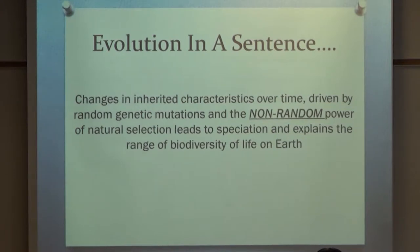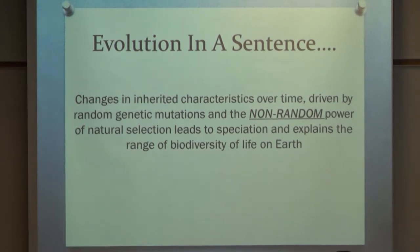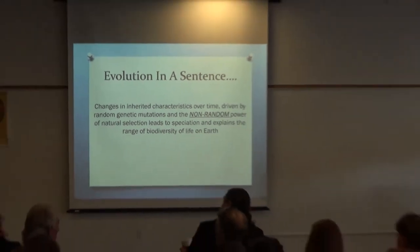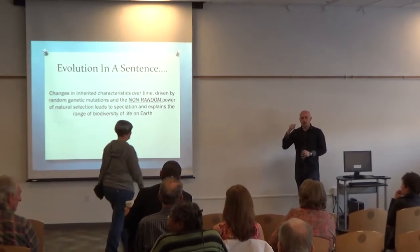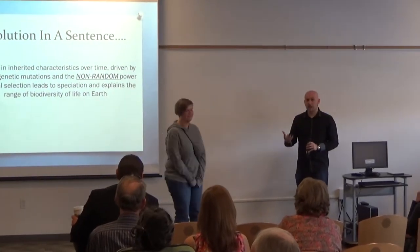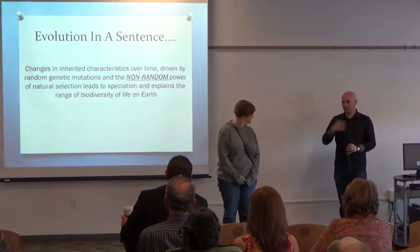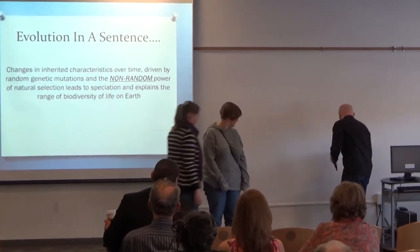So, if I wanted to sum up evolution in a sentence with everything I'm talking about so far, I'd simply say that it's changes in inherited characteristics over time, driven by random genetic mutations and the non-random power of natural selection. And I think this is a very important point, and I'd like to emphasize it. Could I ask two people to come up here and help me demonstrate something? You just have to hold something for me. Just 2 people. Anya and Jen. So, evolution is random, in a way. But, in another way, it's anything but random. And this is how I want to demonstrate this.